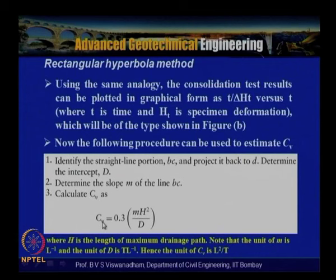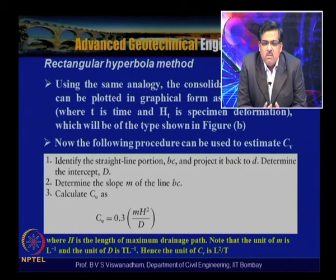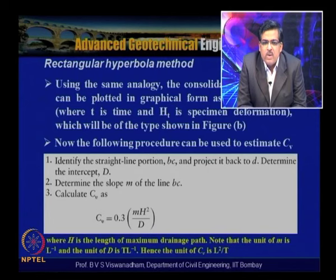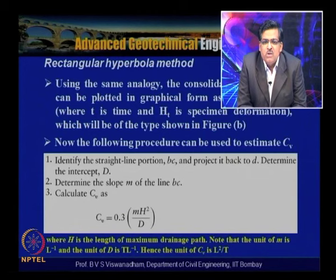Calculate Cv as: Cv = 0.3 × m × h² / D, where h is the maximum drainage path length. The unit of m is L⁻¹, and unit of D is T/L. Checking units: (1/L) × L² × (T/L)⁻¹ simplifies to L²/T — that is, m²/s or m²/year — confirming dimensional consistency. This is how the coefficient of consolidation is obtained using the rectangular hyperbola method.